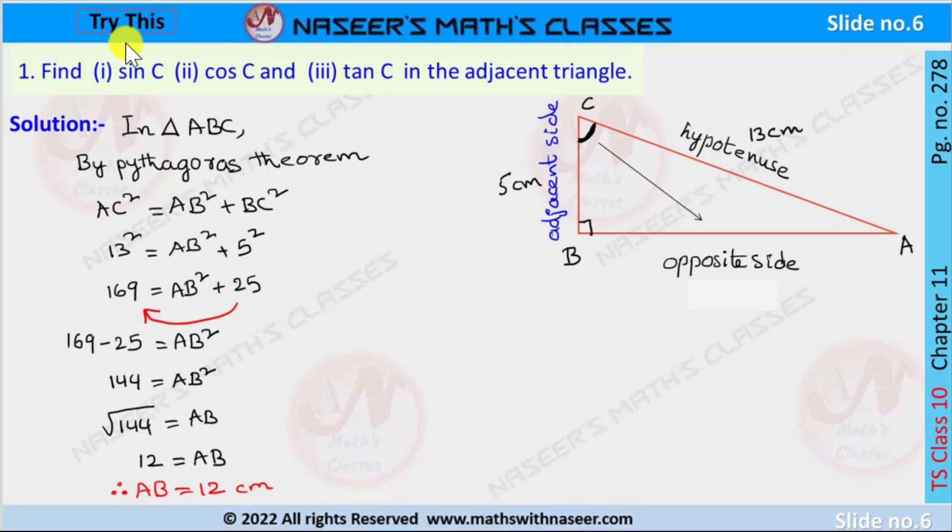Now we are going to solve try this, page number 278, Chapter 11 Trigonometry. Find sin C, cos C, and tan C in the adjacent triangle. A right angle triangle ABC is given.